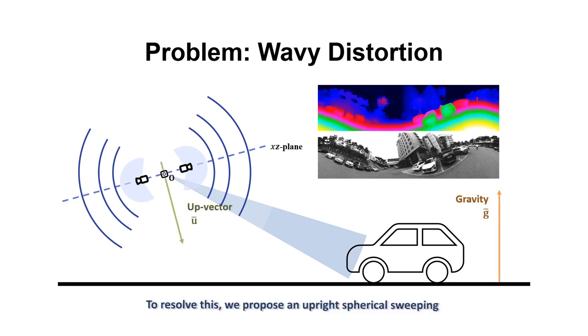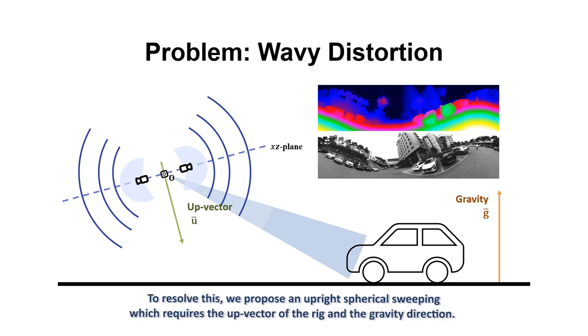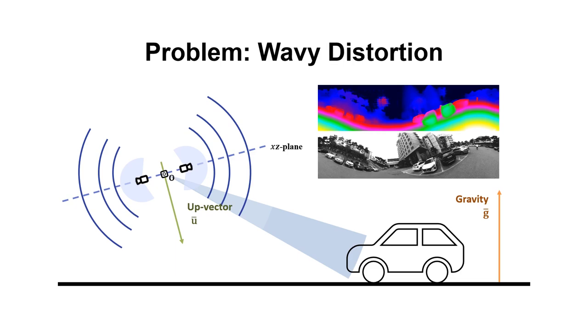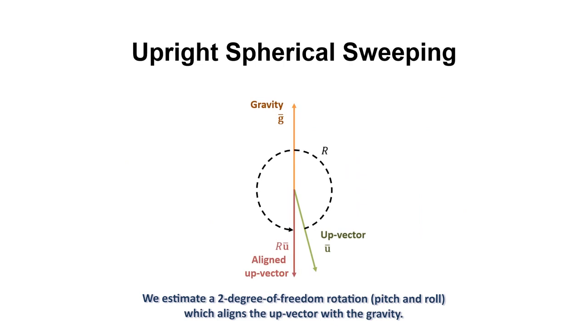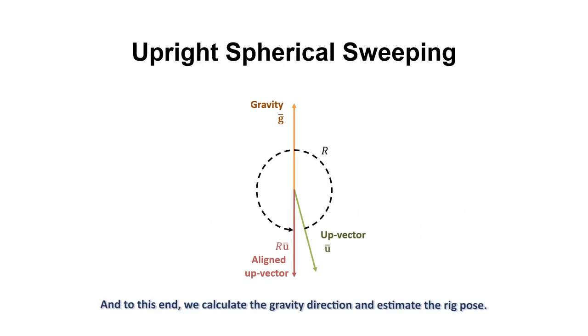To resolve this, we propose an upright spherical sweeping which requires the up-vector of the rig and the gravity direction. We estimate a 2 degree of freedom rotation which aligns the up-vector with the gravity. And to this end, we calculate the gravity direction and estimate the rig pose.